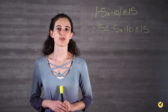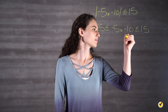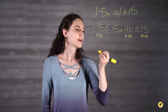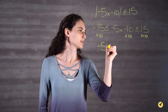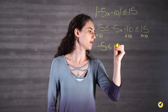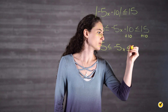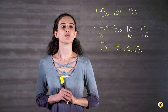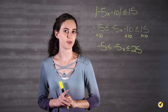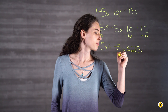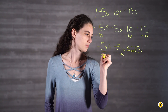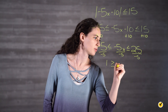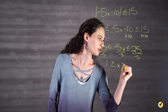Then add 10 to all three parts. This gives us negative 5 is less than or equal to negative 5x, which is less than or equal to 25. And divide by negative 5, remembering to flip your sign since you're dividing by a negative. This gives us 1 is greater than or equal to x, which is greater than or equal to negative 5.